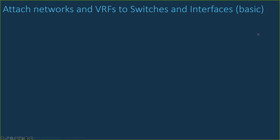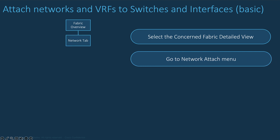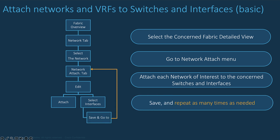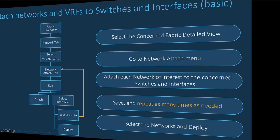Now let's look at the overlay networks and VRF attachments. Go to the Detail View of the concerned fabric and open the Network tab. Double-click on the network you wish to attach to the switches and interfaces. Open the Network Attachment tab and select all the switches you wish to attach to the network. Edit the overlay network, enable Attach if not already enabled, and then select the Interfaces. Go to the next switch and interfaces. You can save and repeat the same actions as many times as you have networks to deploy. Select the overlay networks and then Deploy. You can preview the configuration at any time.